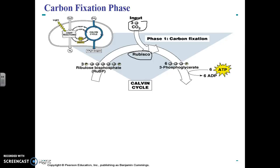If we could inhibit Rubisco, we would have world domination because the plants would no longer be able to make glucose, and eventually all the plants would die and then we'd have nothing to eat. What happens is that three carbon dioxides are each added to a RU-BP, making three six-carbon molecules. And then immediately these three six-carbon molecules are broken in half to make six three-carbon phosphoglycerate molecules. All you really need to know about carbon fixation is that carbon dioxide is added to RU-BP and it's done by the enzyme Rubisco.